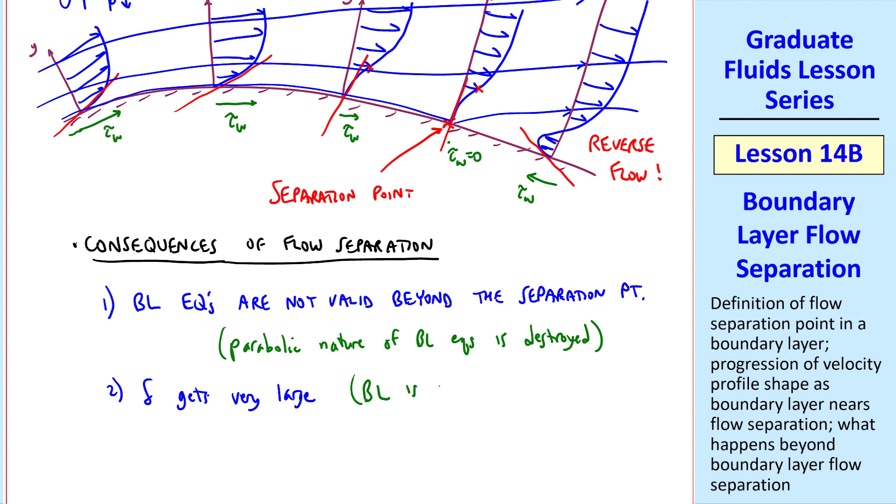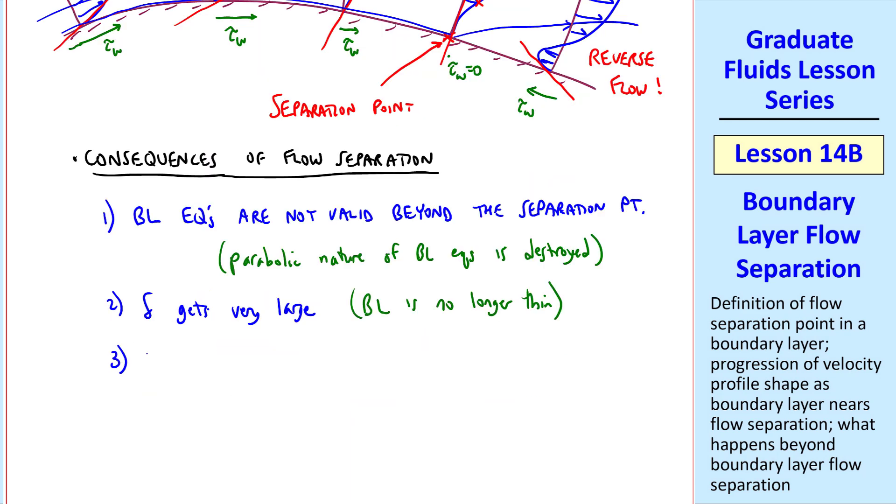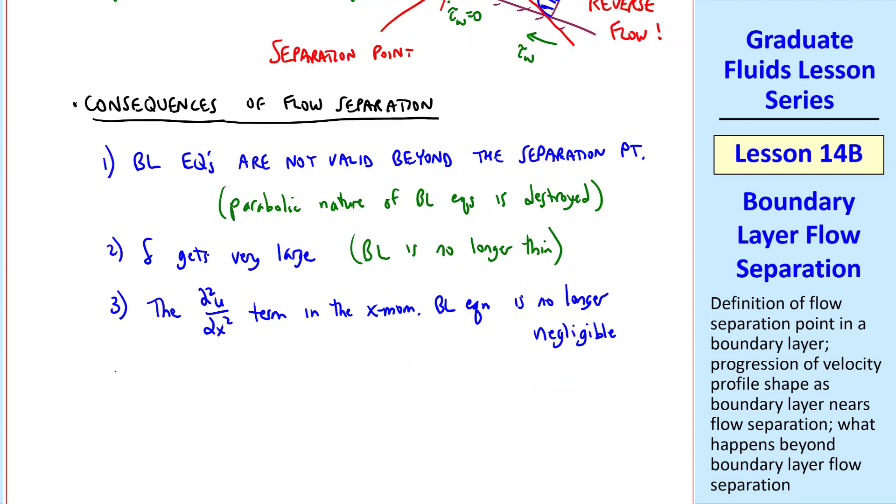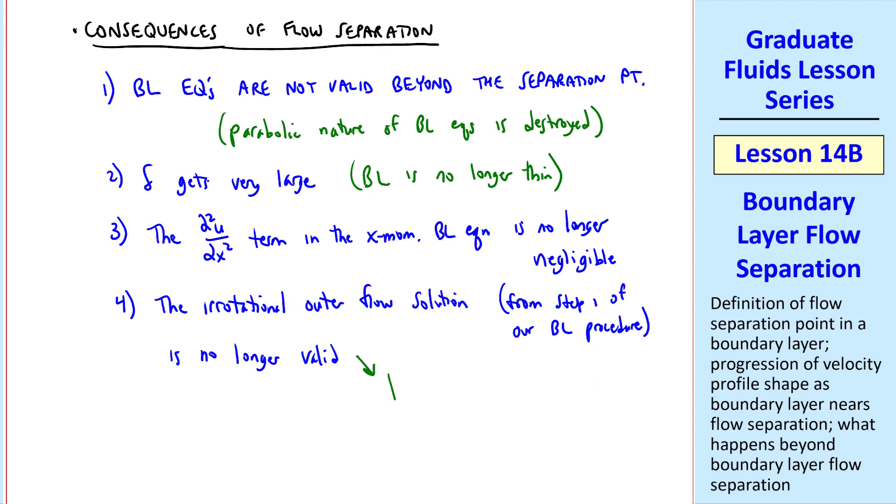Number two, delta gets very large, so the boundary layer is no longer thin, again causing the boundary layer equations to break down. Mathematically, the del squared u del x squared term in the x-momentum boundary layer equation is no longer negligible. The boundary layer equations are not valid. Perhaps even worse is that the irrotational outer flow solution, recall from step one of our boundary layer procedure, is no longer valid.